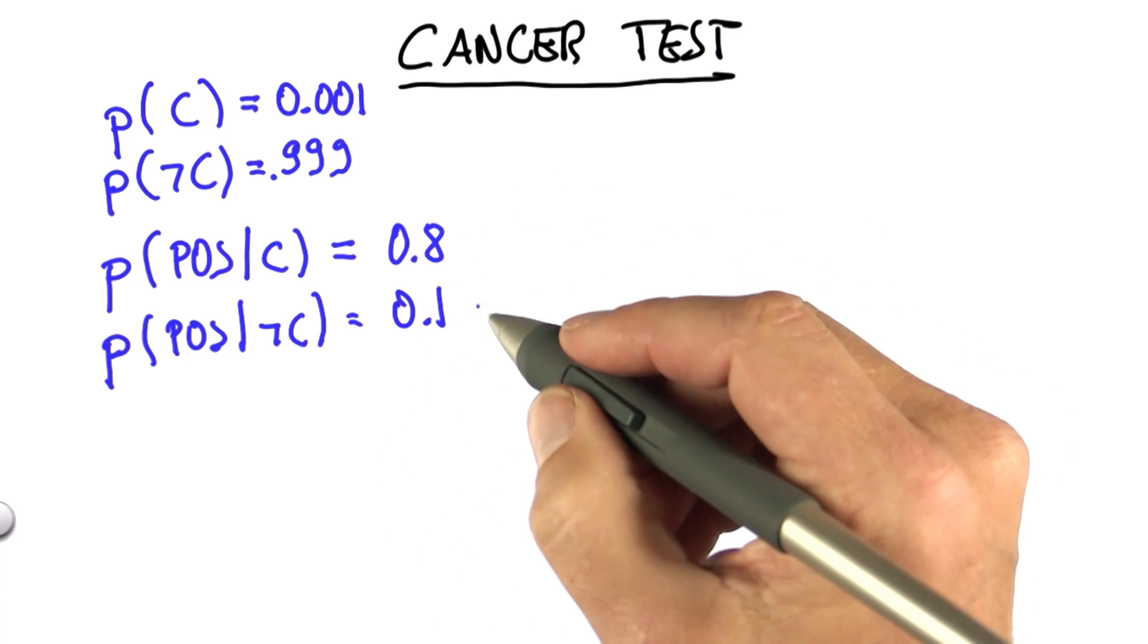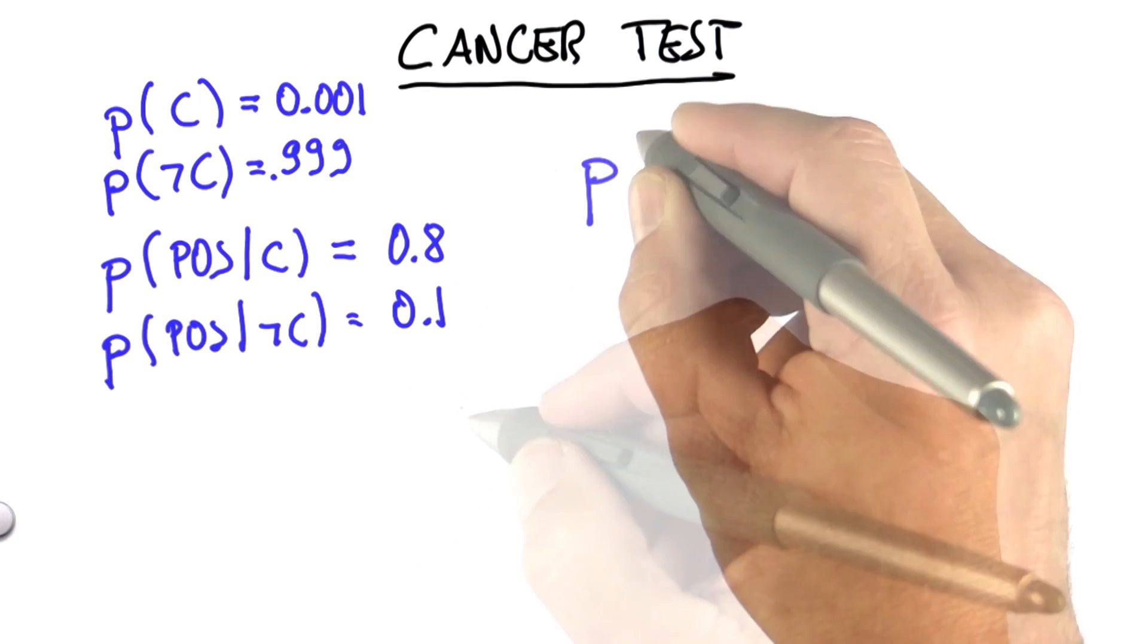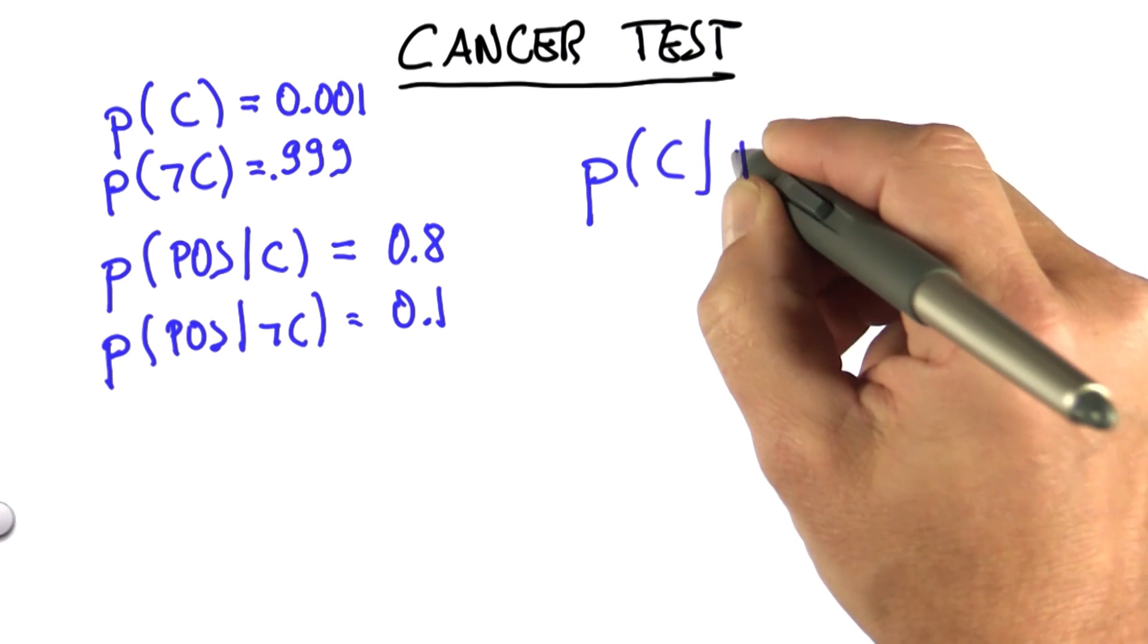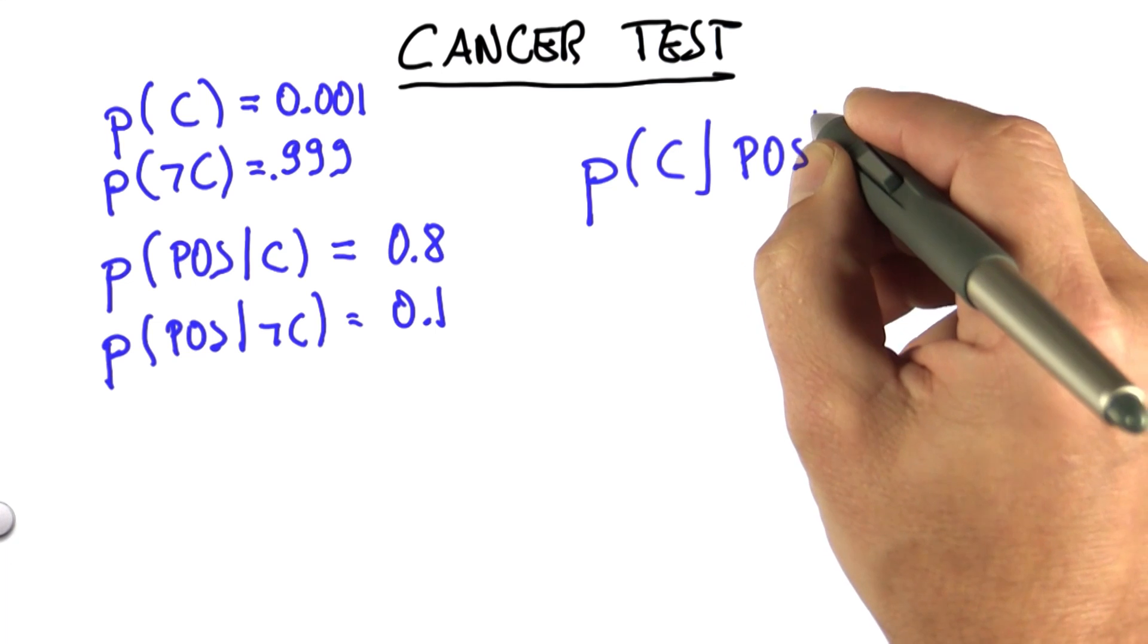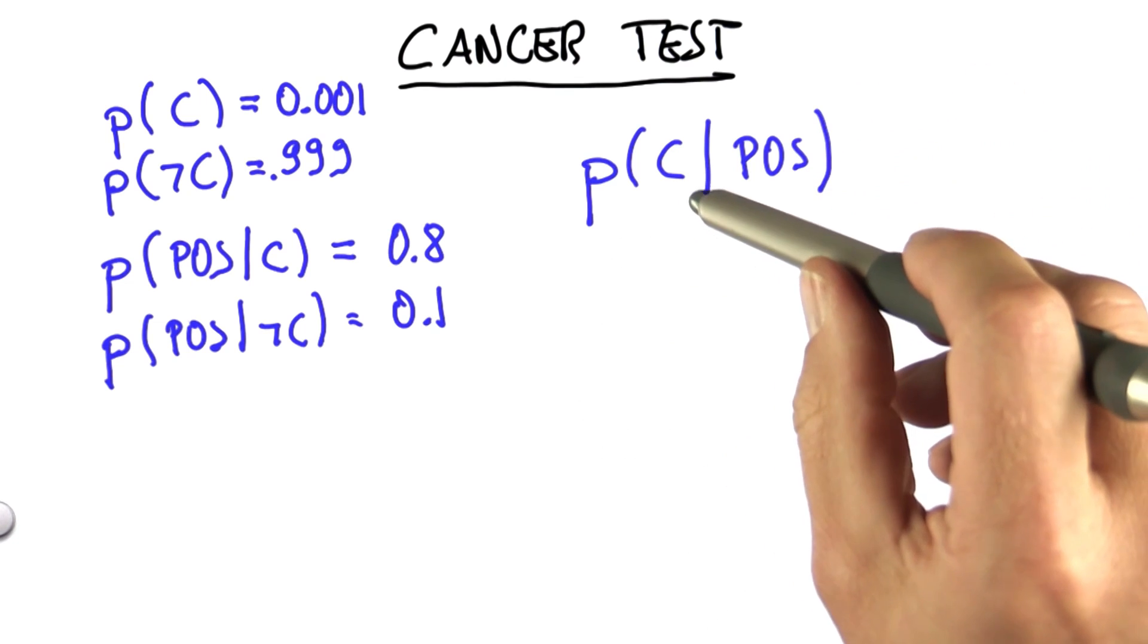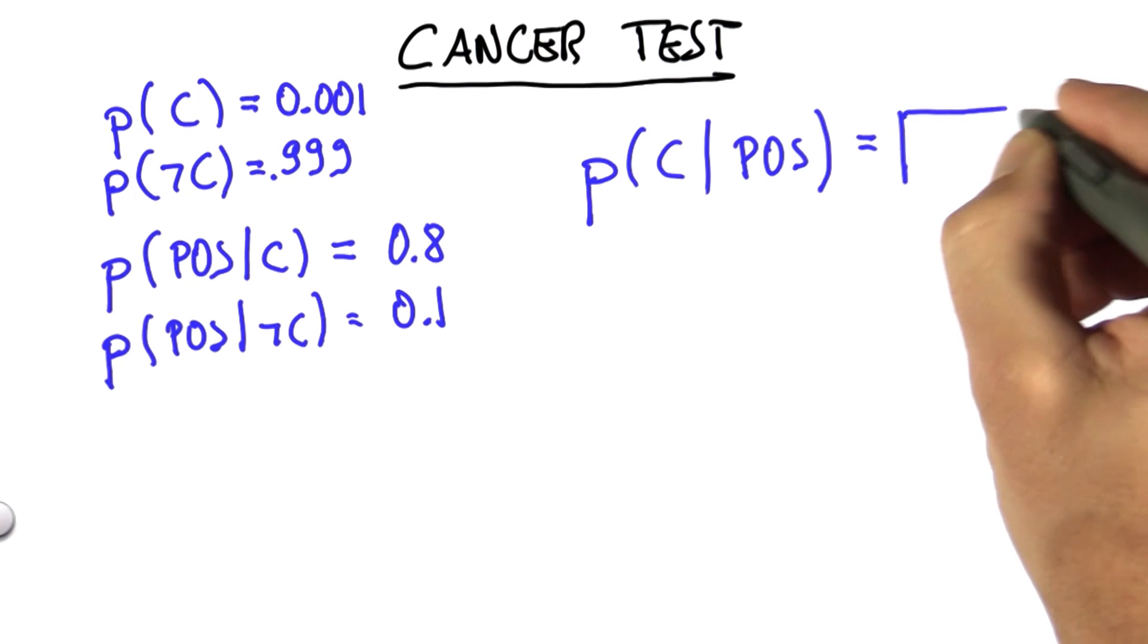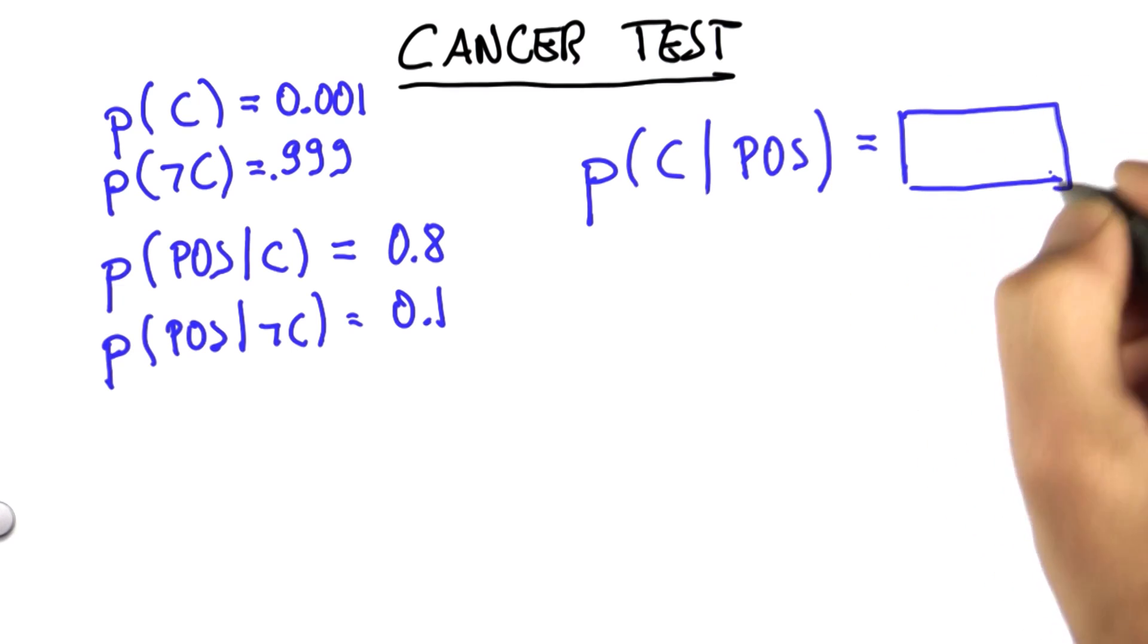So clearly the test has a strong correlation to whether I have cancer. Here's a really difficult question. Can you compute for me the probability of cancer given that I just received a positive test? Let me emphasize this is not an easy question, but you should be able, based on what I taught you, to calculate this result.